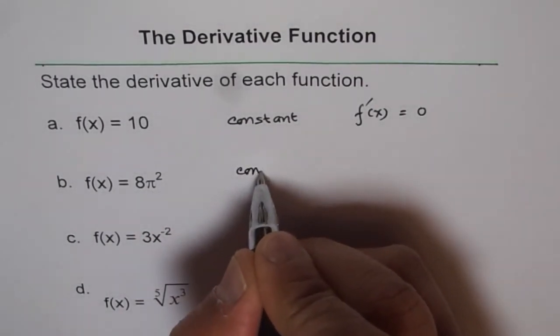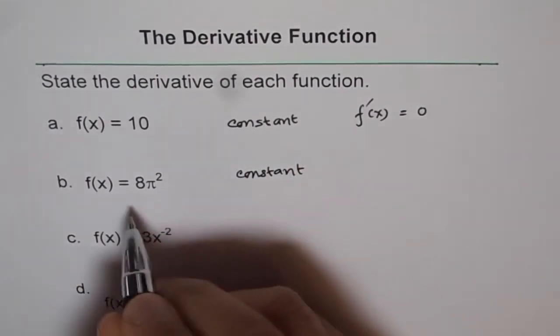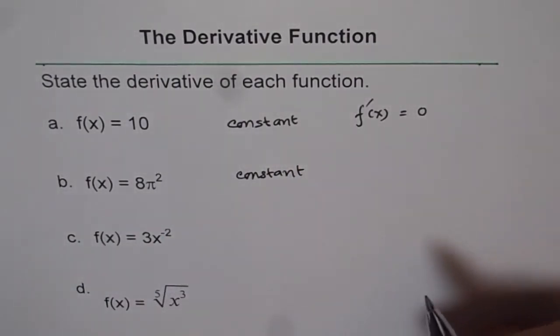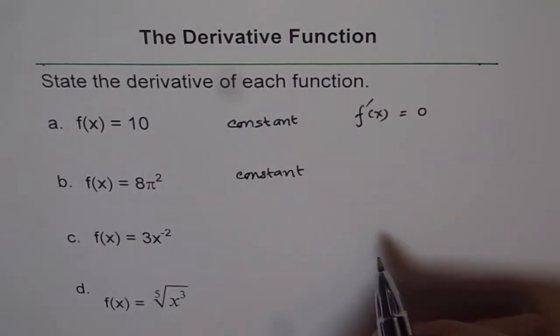So this is also a constant. So if it is a constant, it never changes. So rate of change or slope at this function will always be 0.